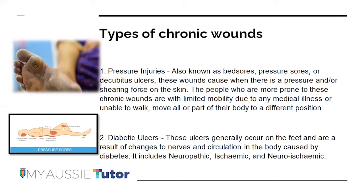Diabetic ulcers occur on the feet as a result of changes to nerves and circulation caused by diabetes. They include neuropathic (nerve-involved), ischemic (blood supply stopped), and neuro-ischemic (combination of both) injuries. A diabetic patient with high blood glucose who sustains a minor foot injury can develop a full diabetic ulcer due to impaired immunity. This can progress to ischemia and necrosis of the foot.